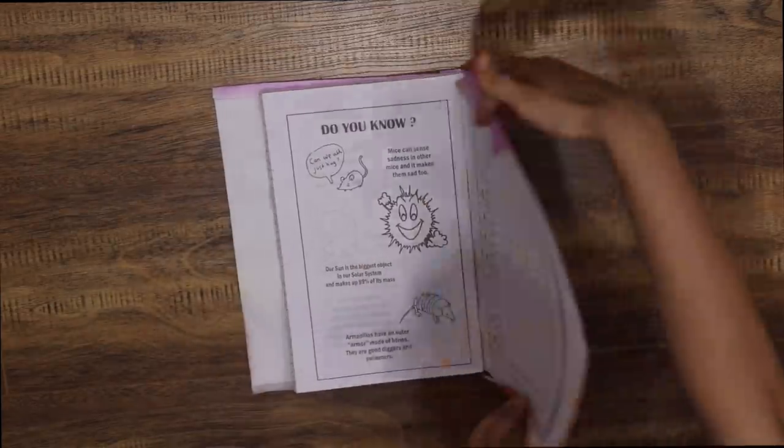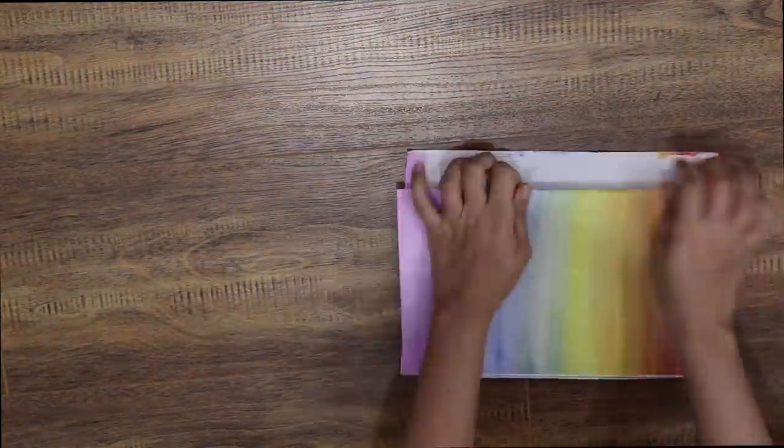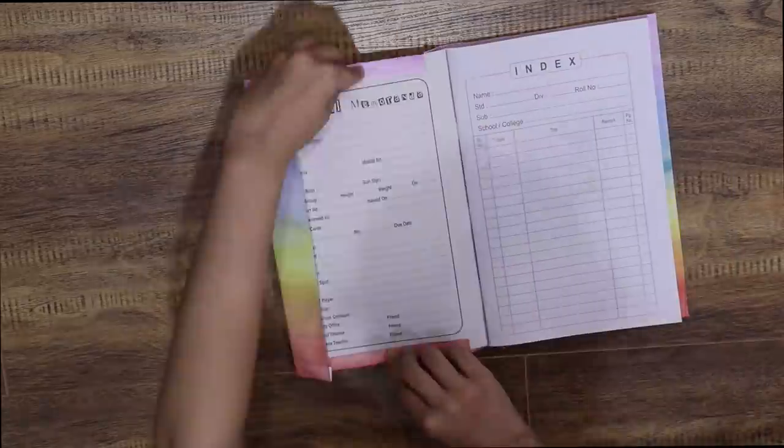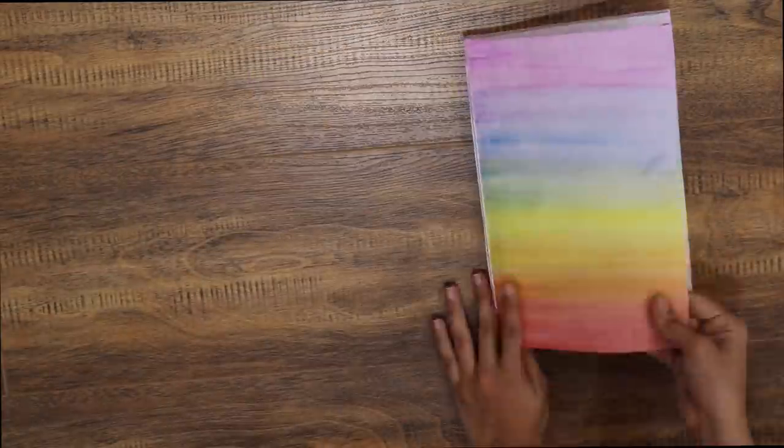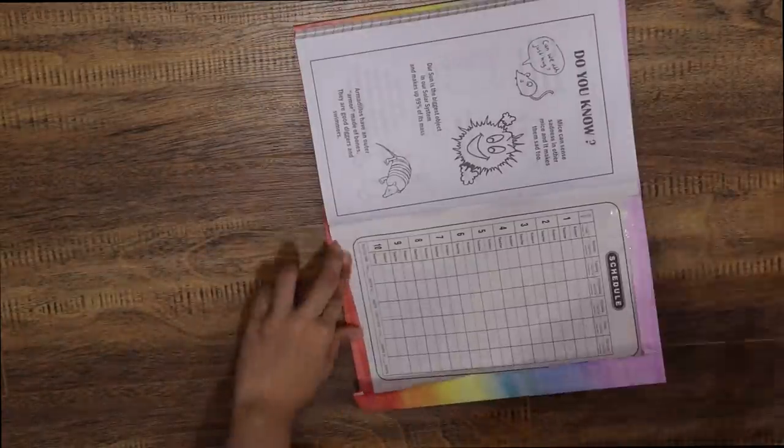Then we open the back and fold in the sides, and then we put in the extra paper inside. Corners ko triangle mein convert karna hai, and then we just stick everything. And that's your rainbow notebook ready.